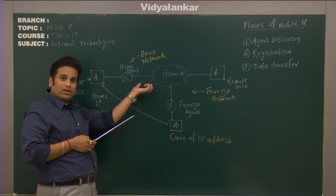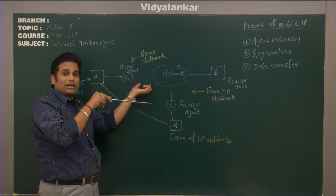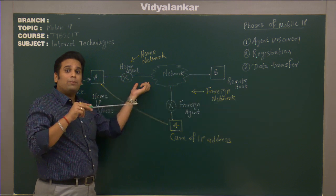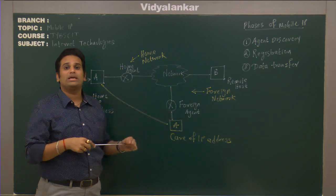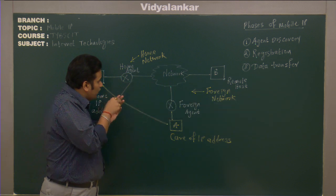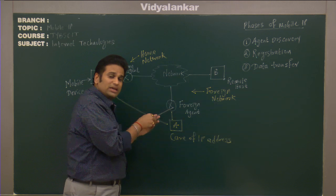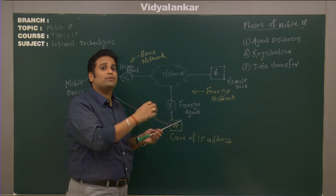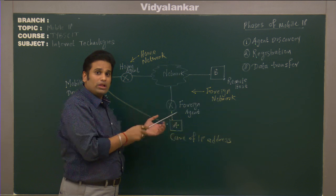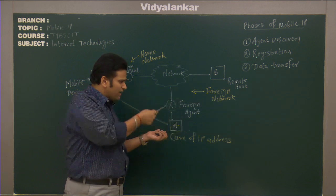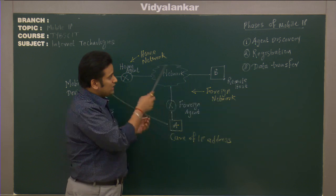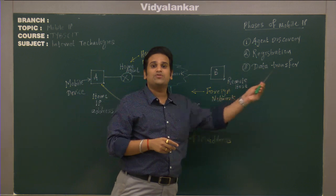A new packet is created in which the original packet is encapsulated — this process is known as tunneling. The packet travels from the home agent to the foreign agent; this is also known as the encapsulation process. The foreign agent then decapsulates the packet, removes the wrapper, and understands that the packet is meant for machine A. This is how data transfer takes place in Mobile IP.